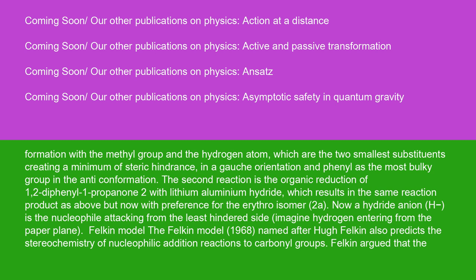The second reaction is the organic reduction of 1,2-diphenyl-1-propanone-2 with lithium aluminium hydride, which results in the same reaction product as above, but now with preference for the erythro isomer (2A). Now a hydride anion, H⁻, is the nucleophile attacking from the least hindered side. Imagine hydrogen entering from the paper plane.